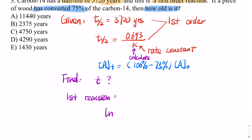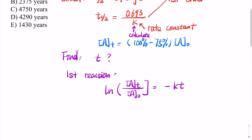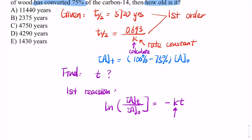The first order integrated rate law equation is: natural log of the final concentration over the initial concentration equals negative k times t. We can calculate k first and then plug it into this expression.